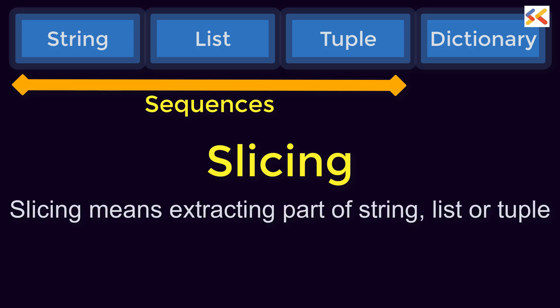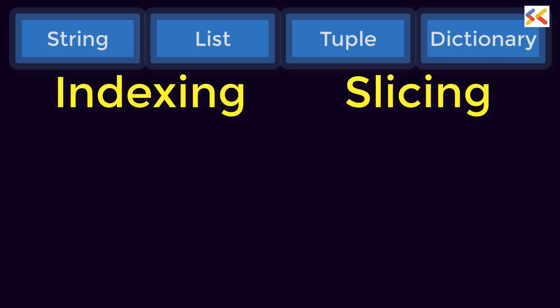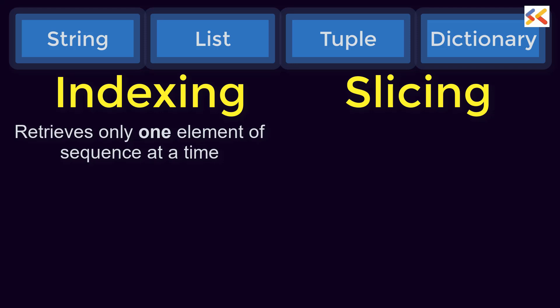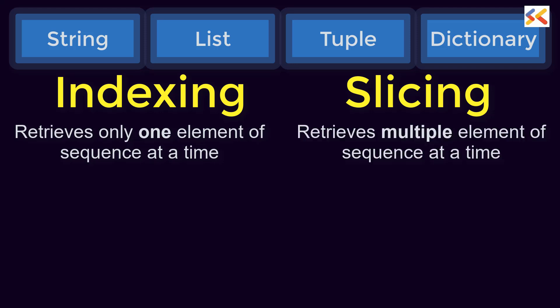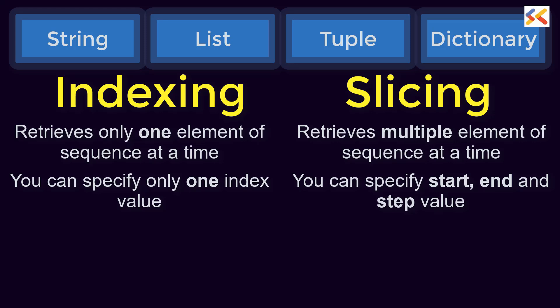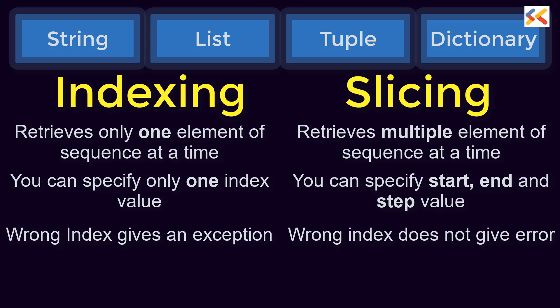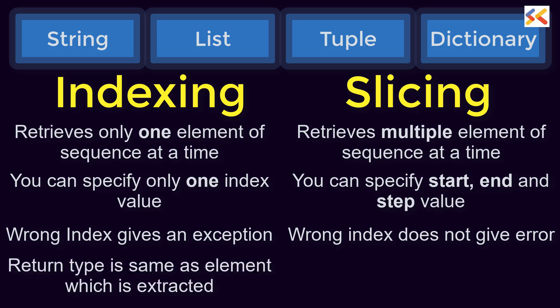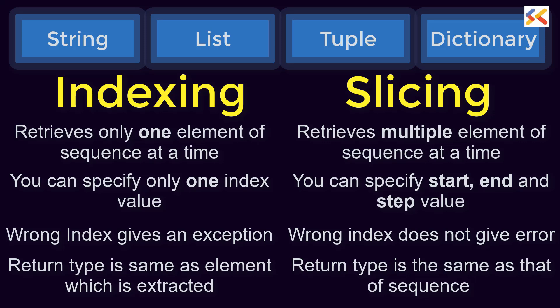Slicing means extracting part of a string, list or tuple. The first question is how is it different from indexing and where do we use each? We use indexing when we want to retrieve only one element at a time. We use slicing when we want to retrieve multiple elements. In indexing you can specify only one index; in slicing, we can give start, end and also a step value. In indexing, if you give a wrong index, it will give index error. In slicing, if you give a wrong index, it does not give any error. In indexing, the return type is the type of the element at that index. But in slicing, if you slice a string it returns a string, a list returns a list, and a tuple returns a tuple.